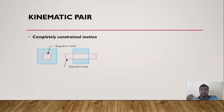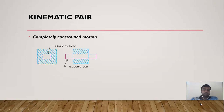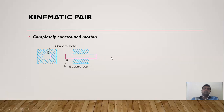Before understanding the pair, we need to understand types of motion. First is completely constrained motion — for example, a square bar in a square hole, where only one motion is possible: sliding from left to right or right to left. That is called completely constrained motion.